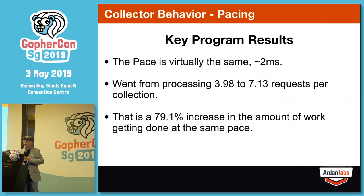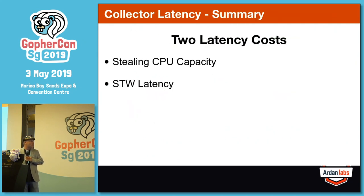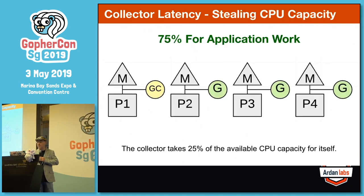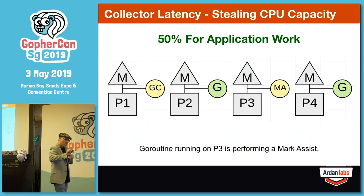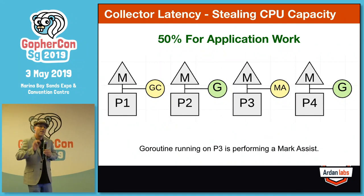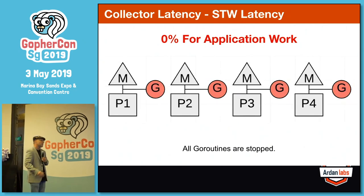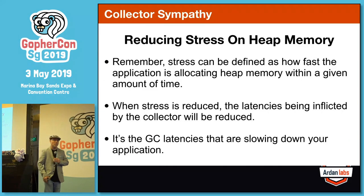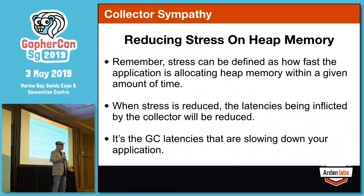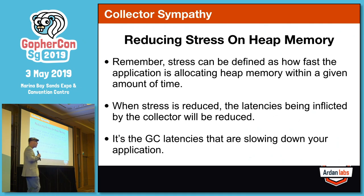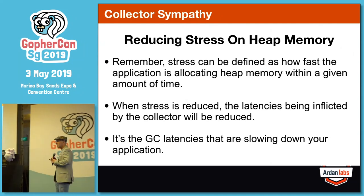Here is the latency cost for your program every time the collection starts. As soon as the collection starts, application work is only at 75% CPU capacity — we're giving up 25%. Also when mark assist is working, even though it's a short burst, we're only running at 50%. Then you have the stop-the-world on top of that. What I really want you to focus on is finding those non-productive allocations — not to slow down the pace, but to give the collector the ability to get as much work done as we can. Run at full throttle, but get more work done before and during each collection by finding allocations we can remove.